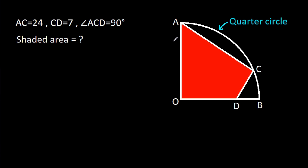In this video, we have been given a quarter circle in which AC is 24, CD is 7, and angle ACD is 90 degrees. We have to find the shaded area.